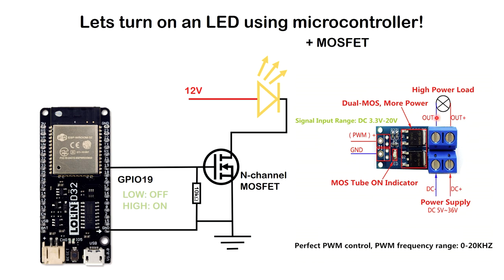You supply positive and negative on one end and connect your load on the other end. I connected the ground to ground because we need a common ground so all the negatives are tied together. This way the reference is easy and I'm able to control the LED using this MOSFET module.